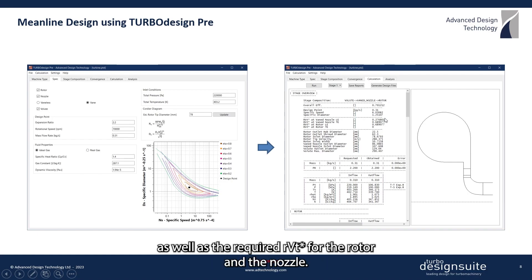As well as the required RVT star for the rotor and the nozzle. This RVT star value is equivalent to the work coefficient and will be used for the 3D inverse design of these components in the next section.